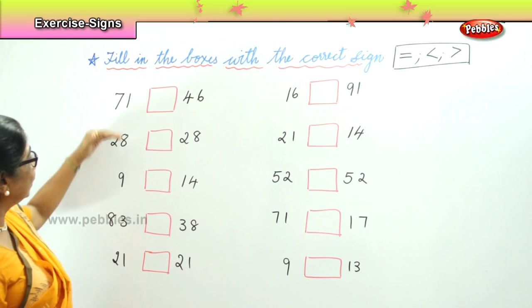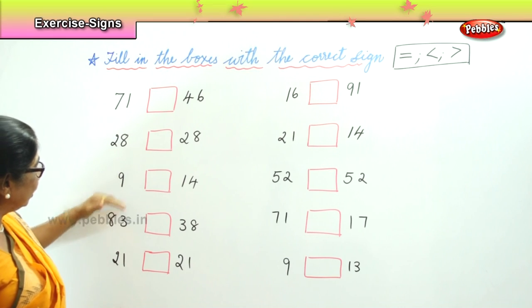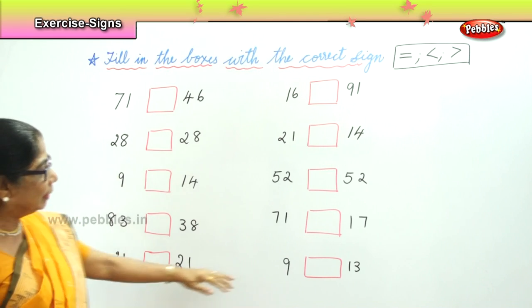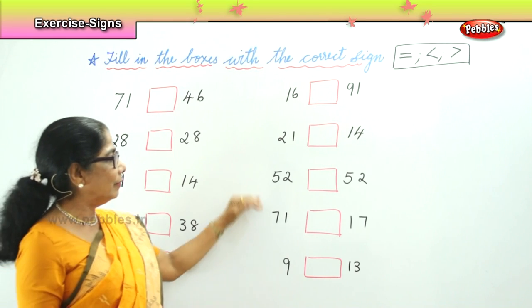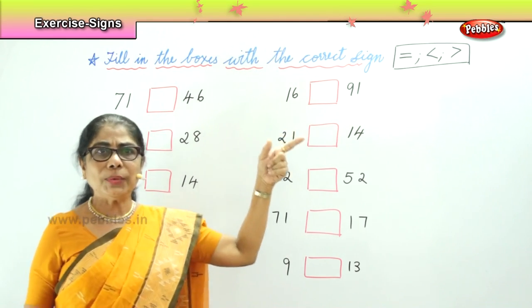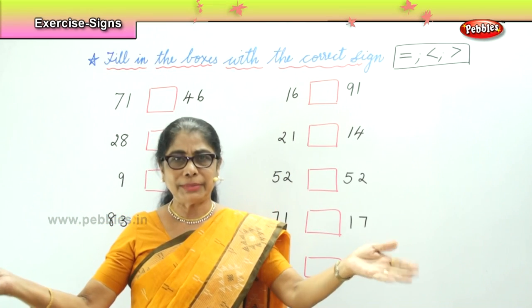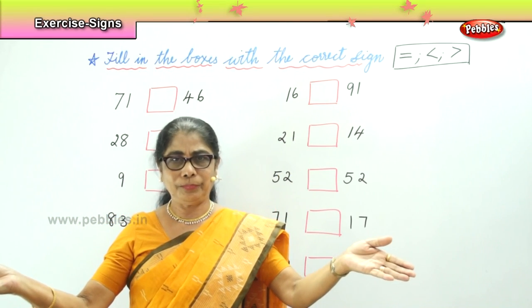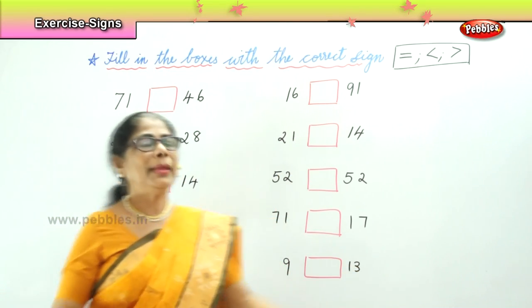We have 1, 2, 3, 4, 5, 6, 7, 8, 9, 10. What is equal to? When the numbers are same — same.